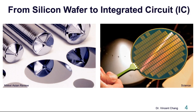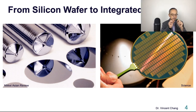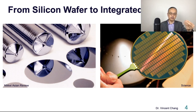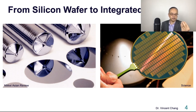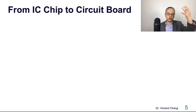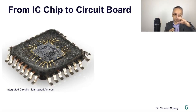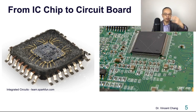An integrated circuit contains different types of electronic components — the resistor, capacitor, inductor, bipolar junction transistor, diode, or metal oxide semiconductor field effect transistor — all integrated in a small chip. So it's called an integrated circuit. And then from the IC chip to a circuit board: on the left is the chip mounted and connected to the pins, and on the right is the chip on a circuit board.